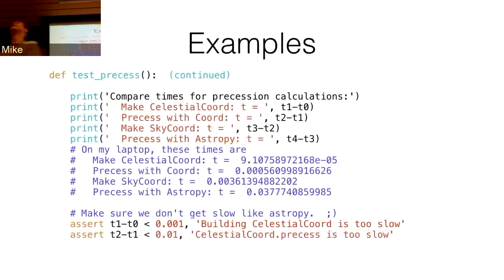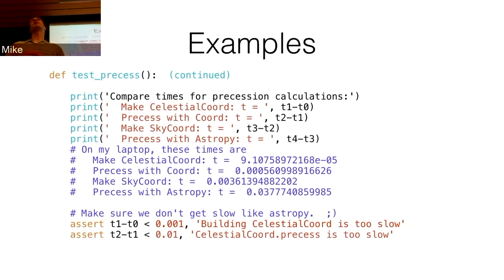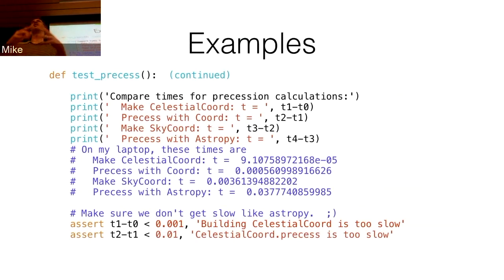Is there a way to test that you don't start using a lot of memory? You can do sys.getsizeof for a single object, but usually memory problems are when you're doing a big calculation — what's the peak memory usage. It's usually the number of objects you've made that haven't been garbage collected. I don't know of a good way to test that.